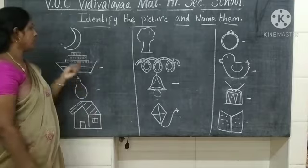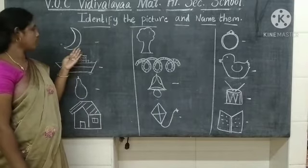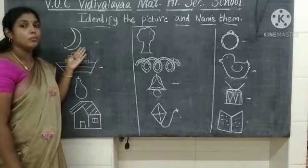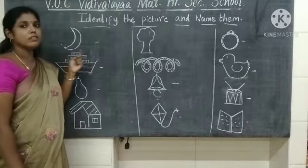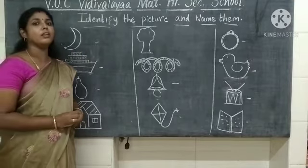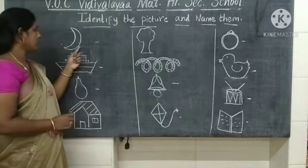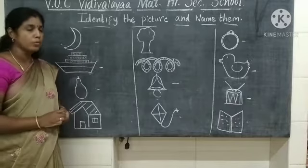Can I start the class, children? What picture is this? This is a moon. What picture is this? This is a moon.